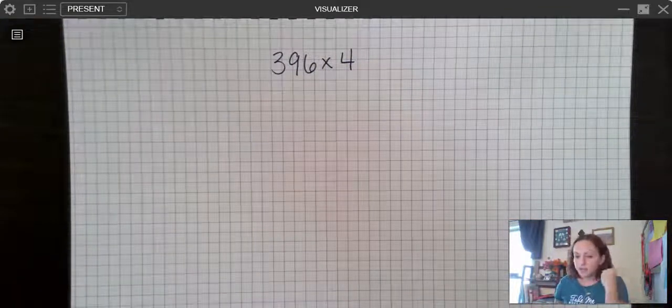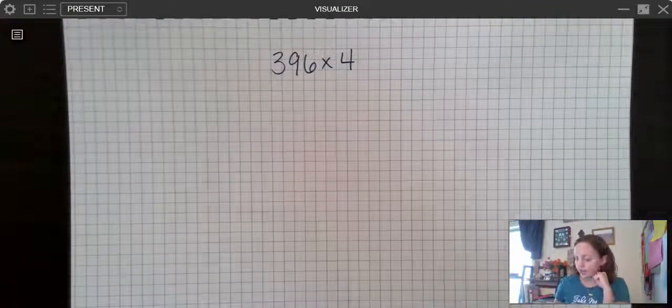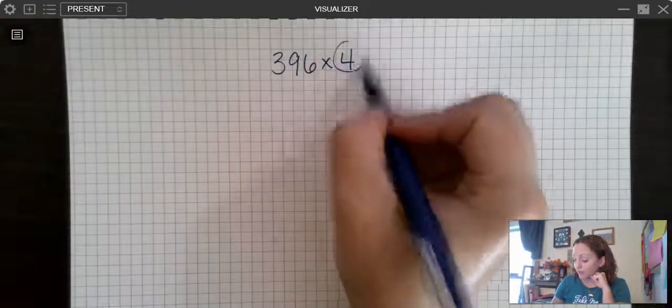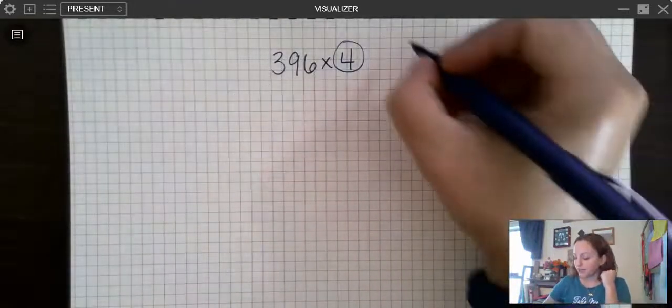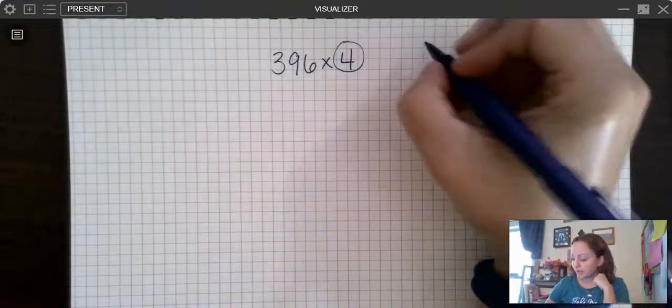Okay, so standard algorithm of multiplication. Let's look at a three-digit number times a one-digit number first. So we are going to multiply 396 times four. Now, remember, if I'm not so great with my multiplication facts, really quickly, I know everything I'm multiplying is going to be times four. So I could list my four times tables just over to the side super fast.